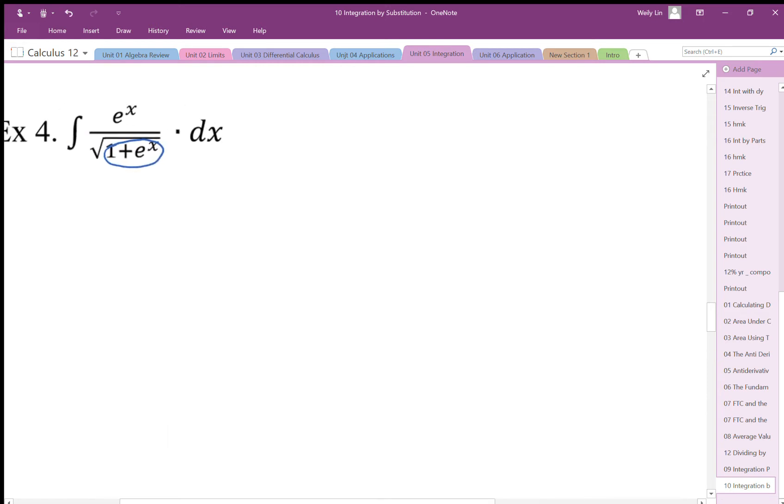plus e to the x. So if I let u equal 1 plus e to the x, I have to see if the derivative accounts for the outside function. If I differentiate that, I get du is equal to e to the x, and I'm going to bring the dx to this side.